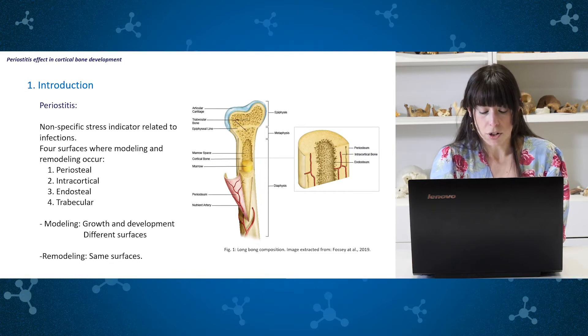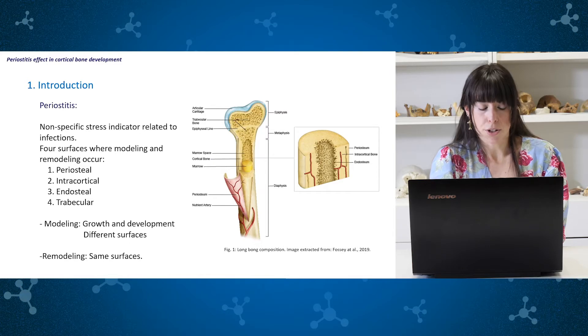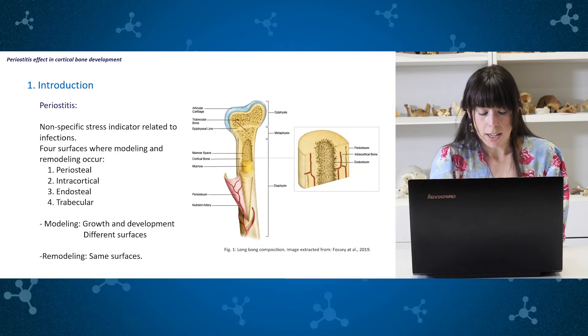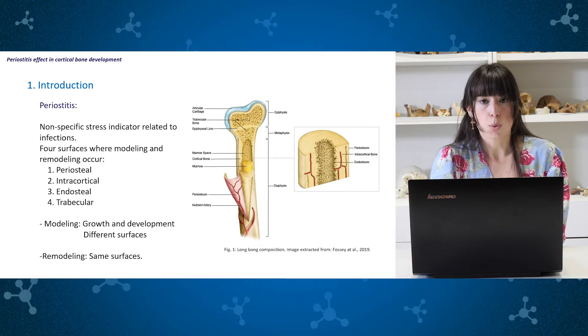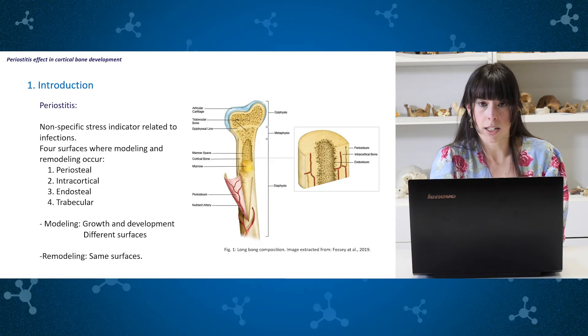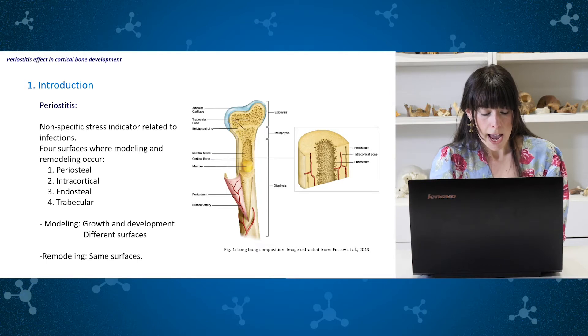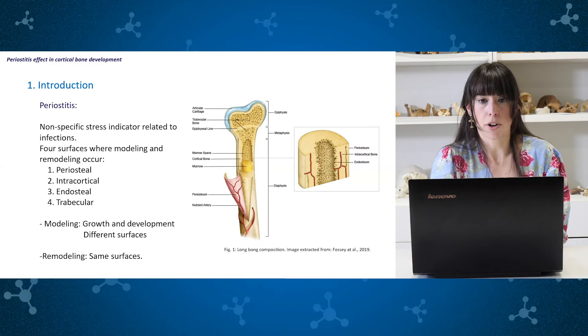It has been evaluated whether the periostitis was active or healed or healing as it is presented in previous works. In previous studies it has been correlated bone loss present in cortical cross sections of the femur with metabolic stress. Microscopic bone loss has been explained by excessive cortical resorption at the endosteal surface resulting in an expanded medullary cavity. What we intend to do with this study is to analyze if these cortical changes can also be seen in other kinds of stress as in infections and if it is so, to what extent does periostitis affect the development and the growth of bones.